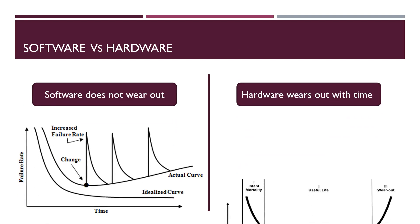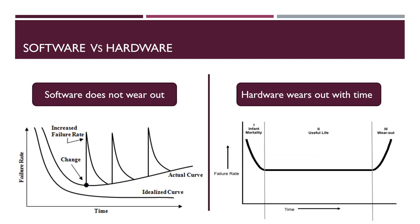Now, we will discuss about the difference between software and hardware. The biggest difference between software and hardware in terms of software engineering is software does not wear out, but hardware wears out. When we see the life cycle of hardware in terms of failure rate and time, the graph looks like a bathtub. This curve is also called bathtub curve.